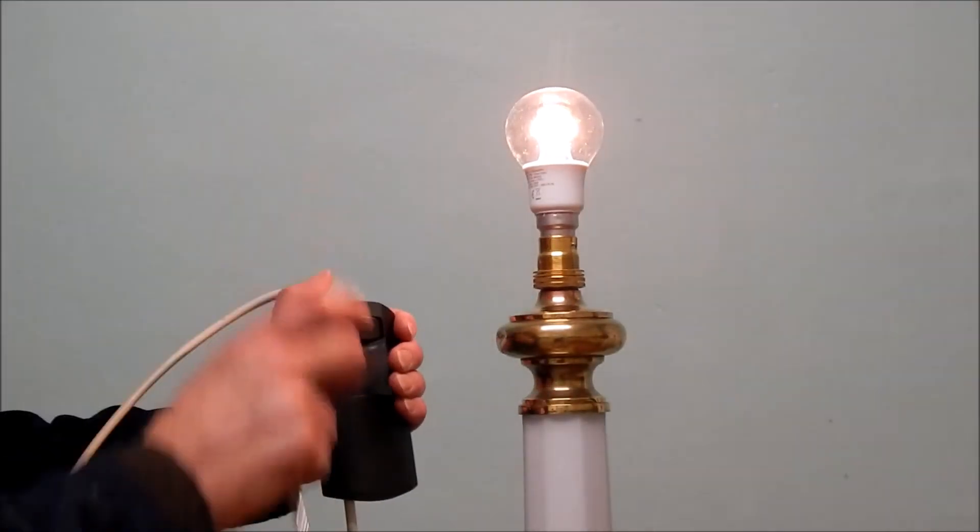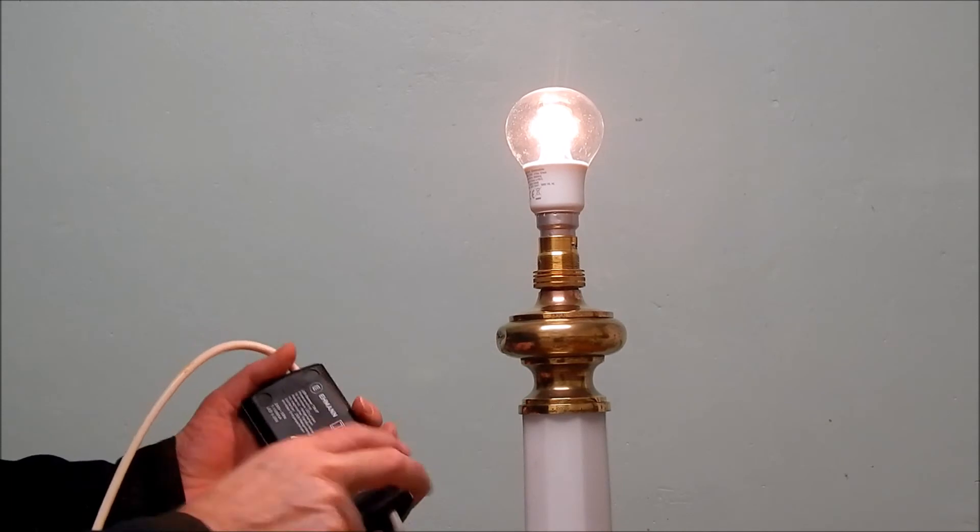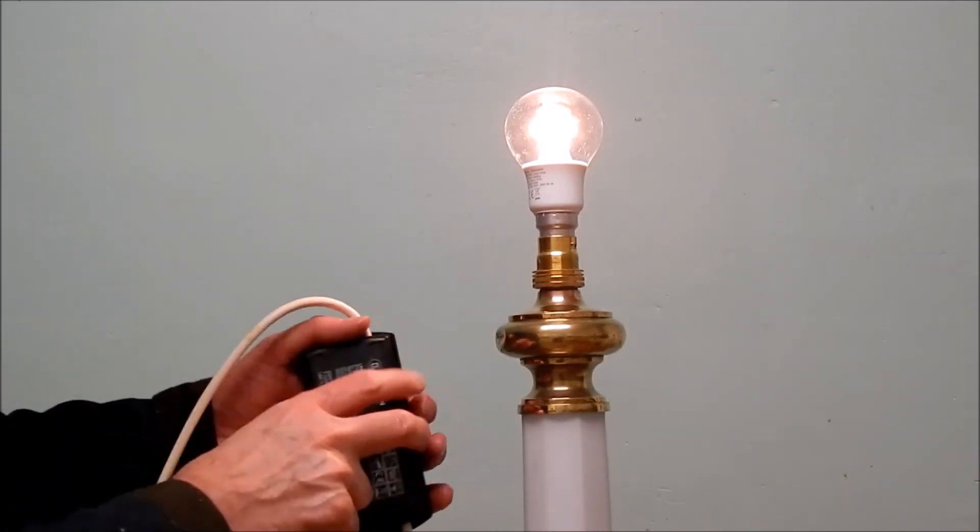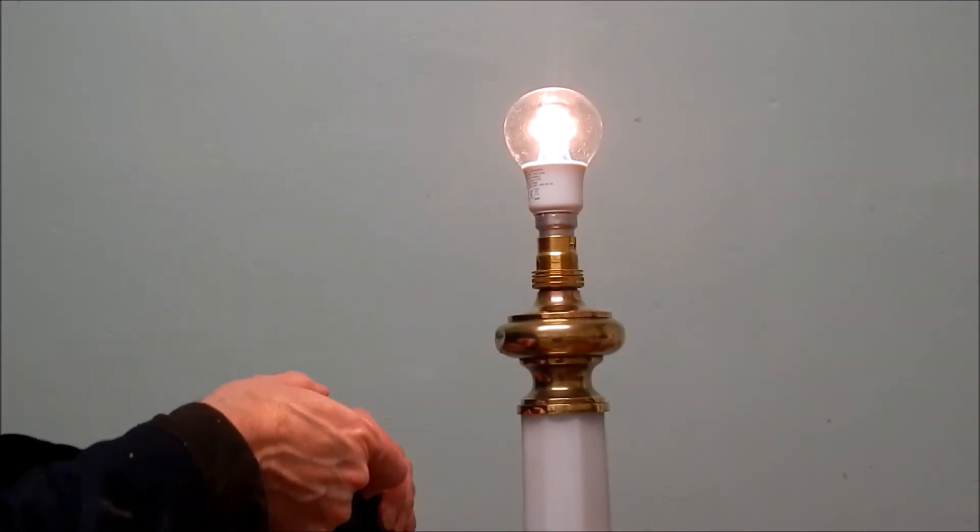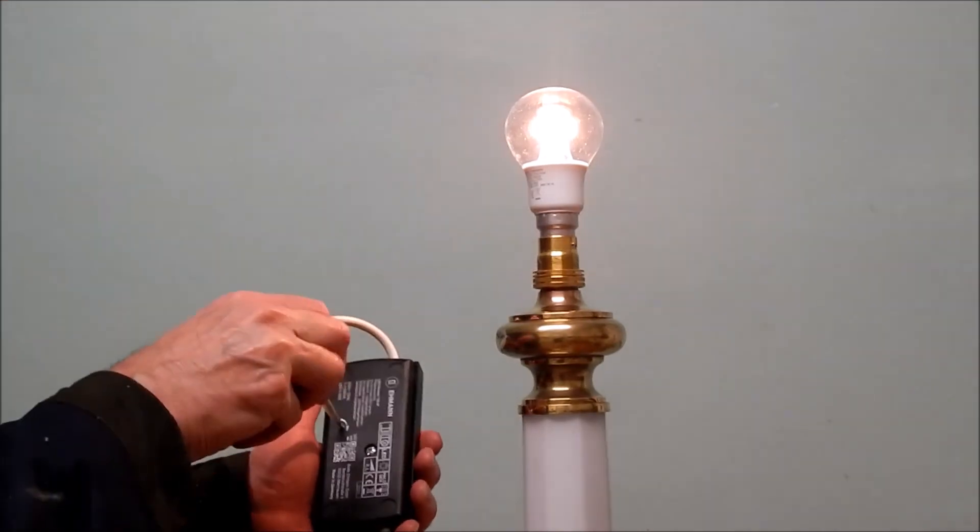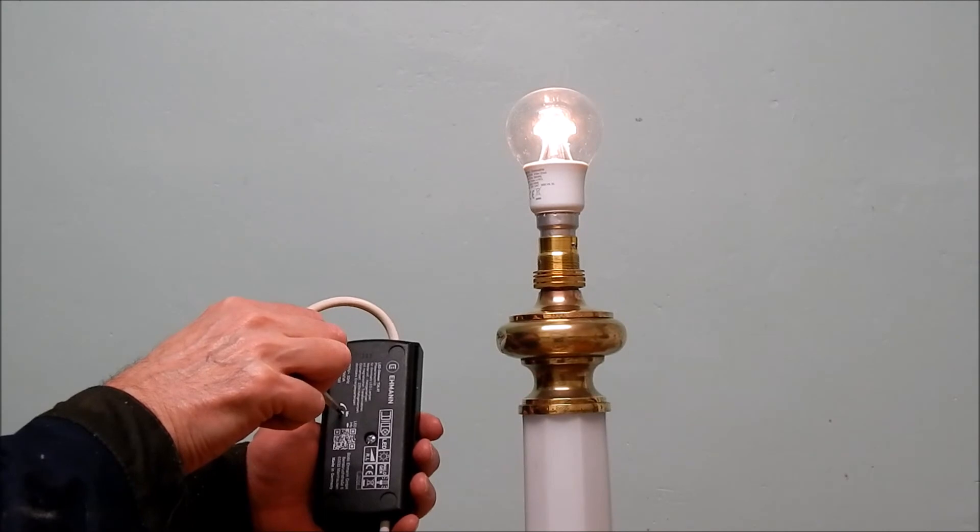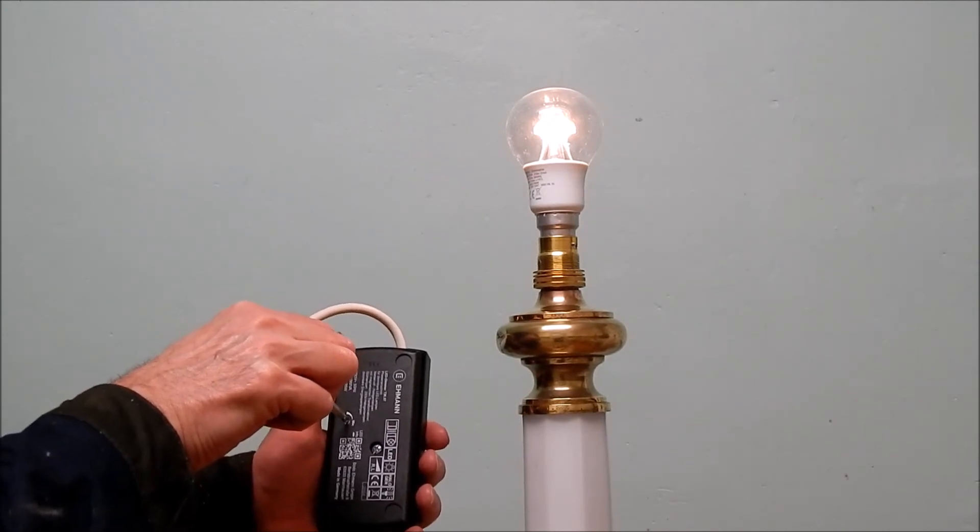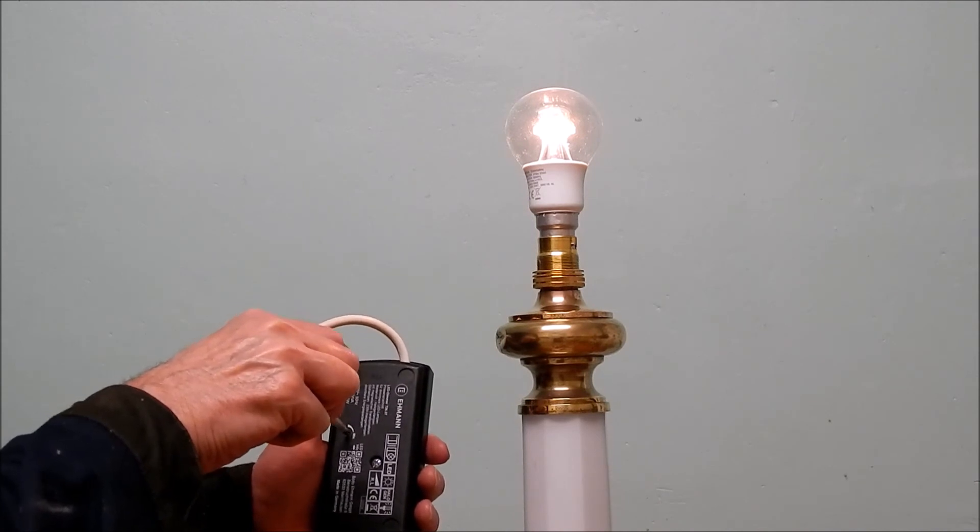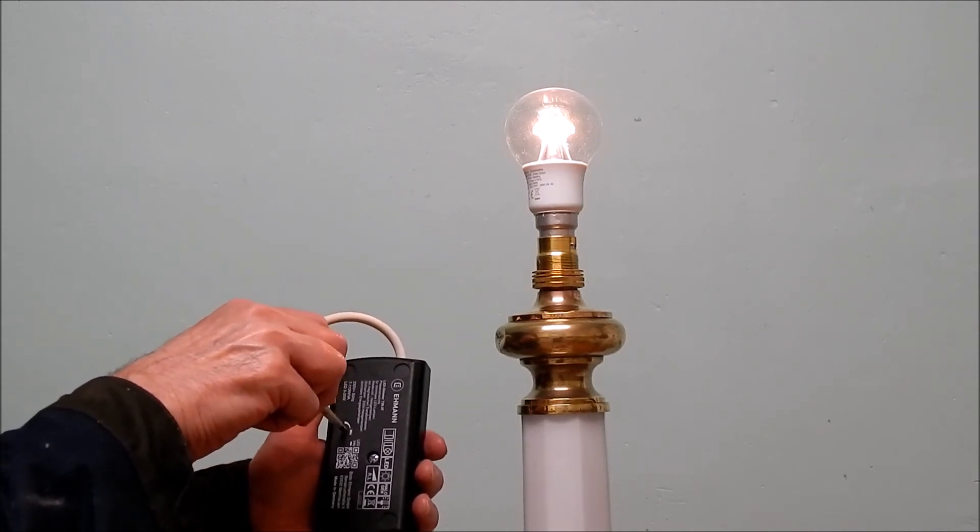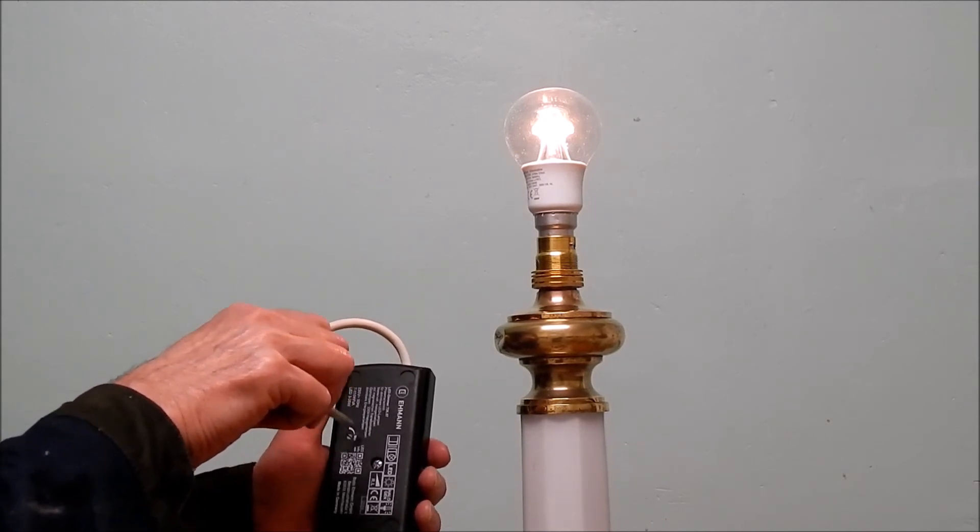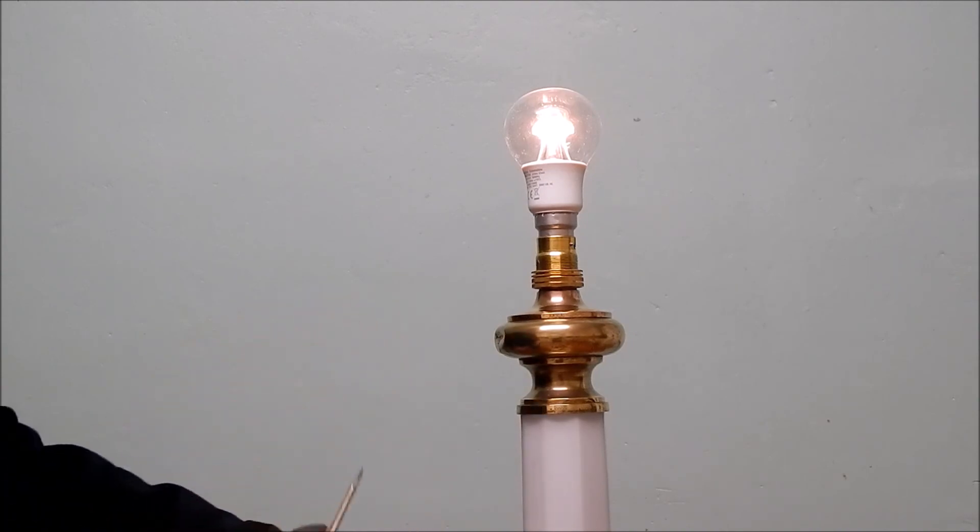It looks nice and stable but on this dimmer there's a little adjustment switch at the back which allows me to set the minimum level. So I'll put the slide dimmer to the minimum and now I just need to adjust this down to the minimum level. So that's quite high. Coming down, coming down. So how low can it go? I think that's all the way down. That's great. So this is now a really good stable dimmer.